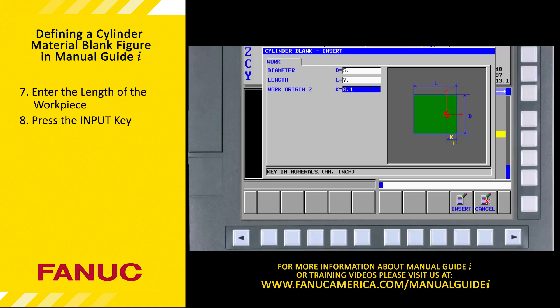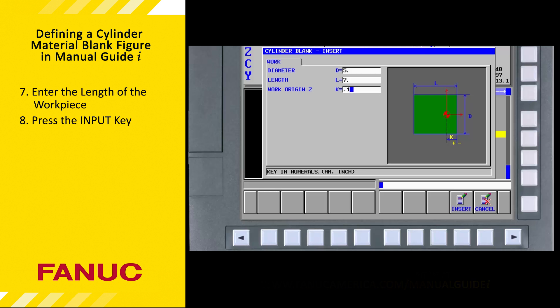Again, it's important to remember this only affects the 3D solid model machining animation and does nothing to actually set the workpiece zero in the program. In this example, we set the workpiece zero one hundred thousandths inside the end of the workpiece blank. Note that the graphic shows that the WorkOriginZ value inside the workpiece is a positive value.